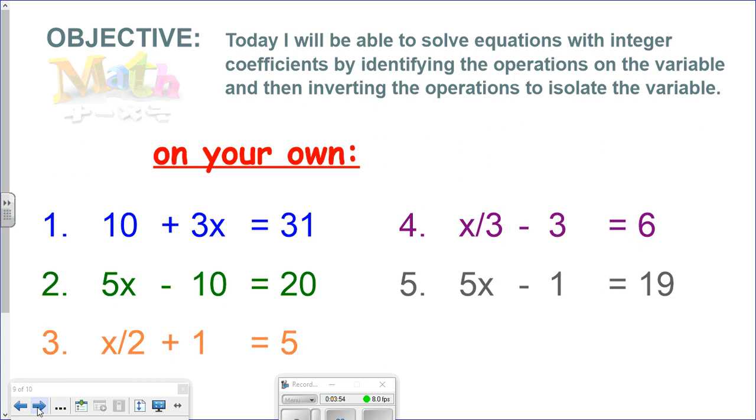Here are a few more equations to try on your own. We'll be working these in class, and you might want to get a jump start on them. The first one, 10 plus 3x equals 31. The second is 5x minus 10 equals 20. The third is x divided by 2, or one half x plus 1 equals 5.